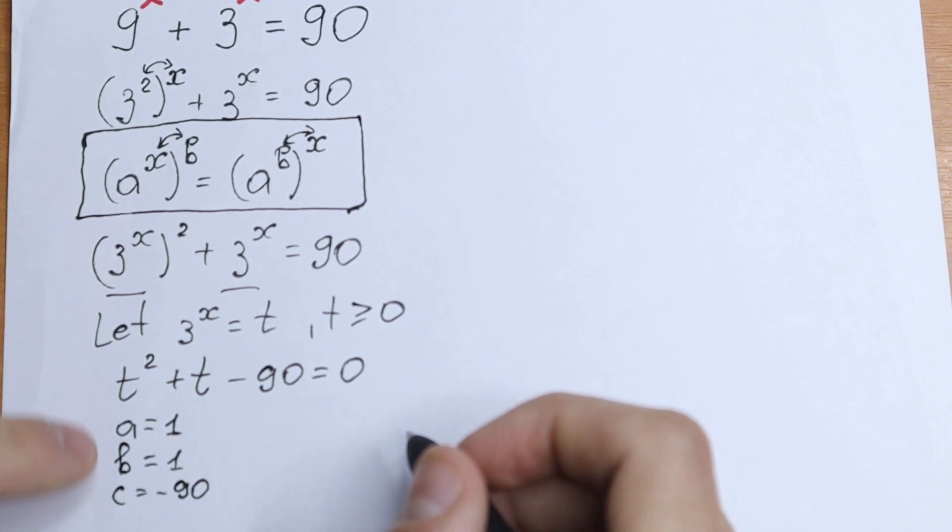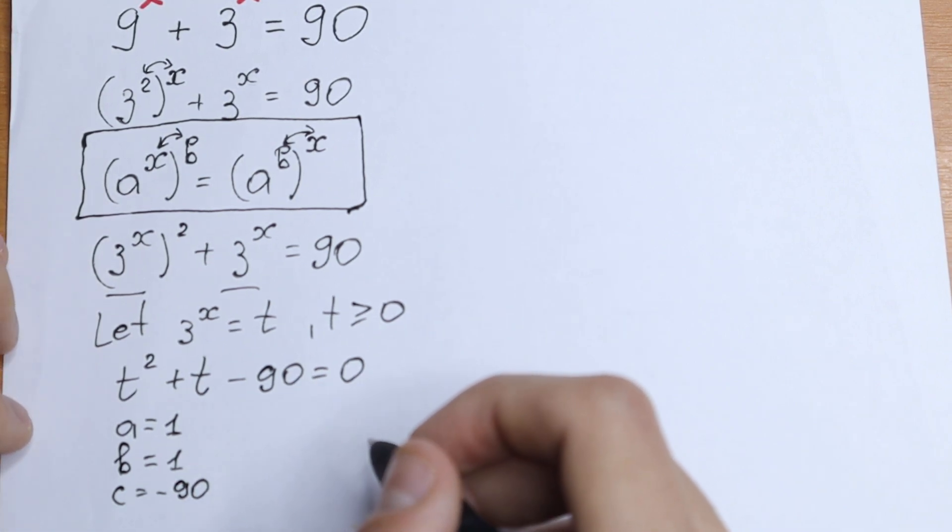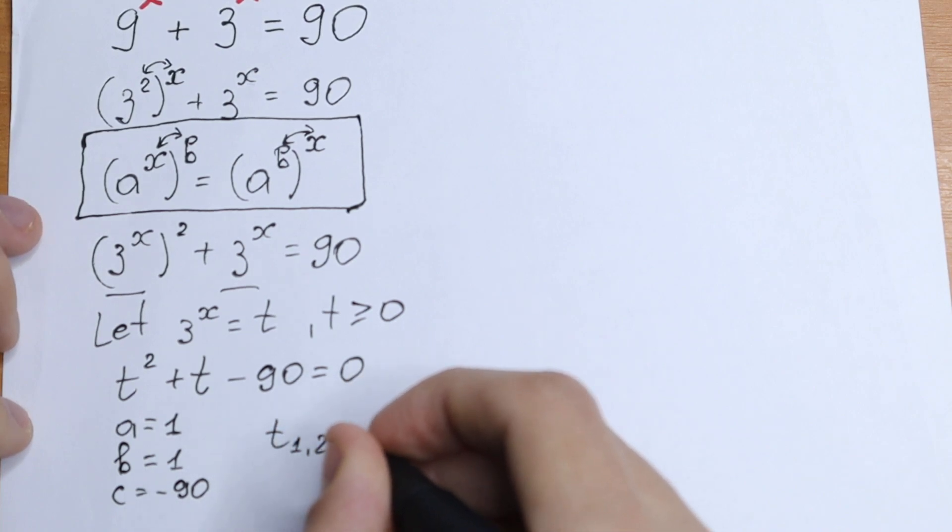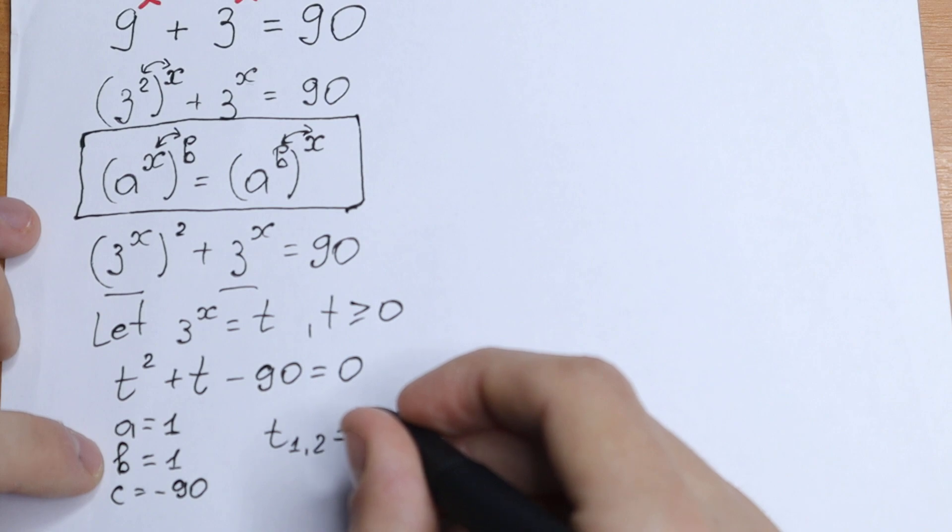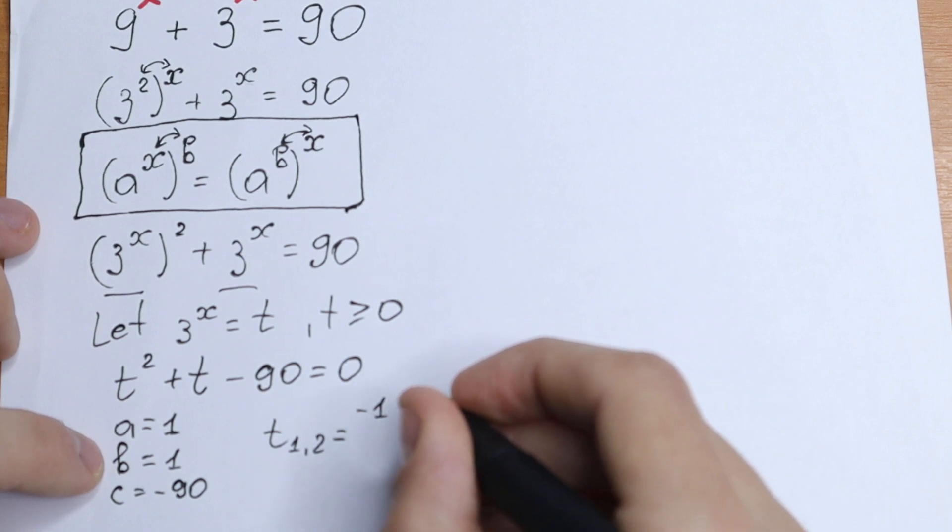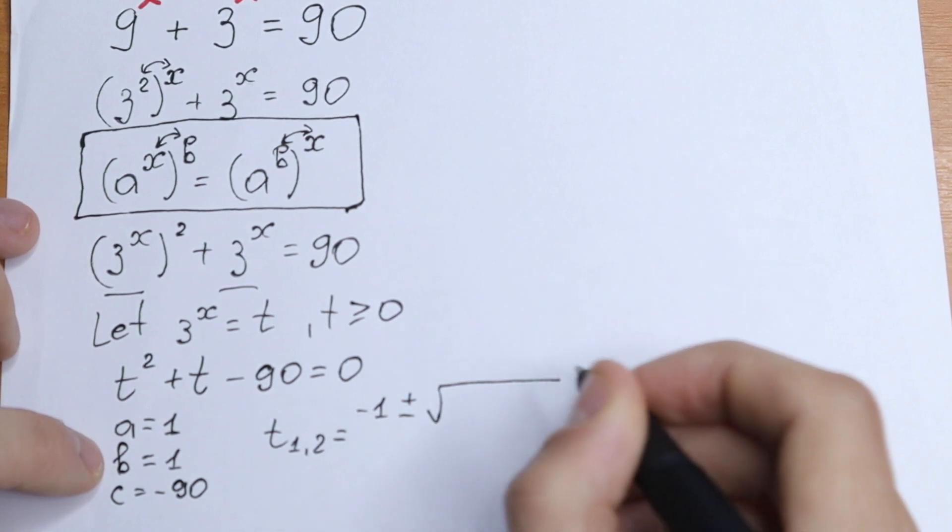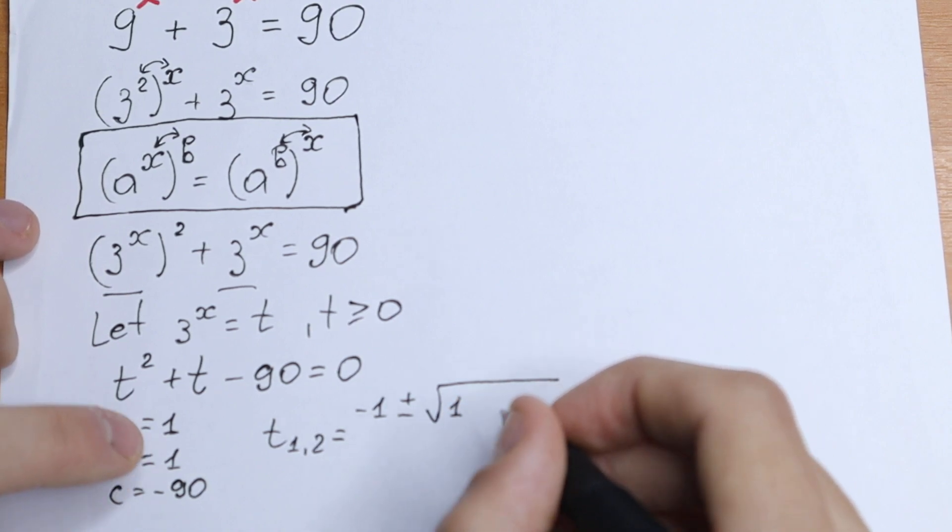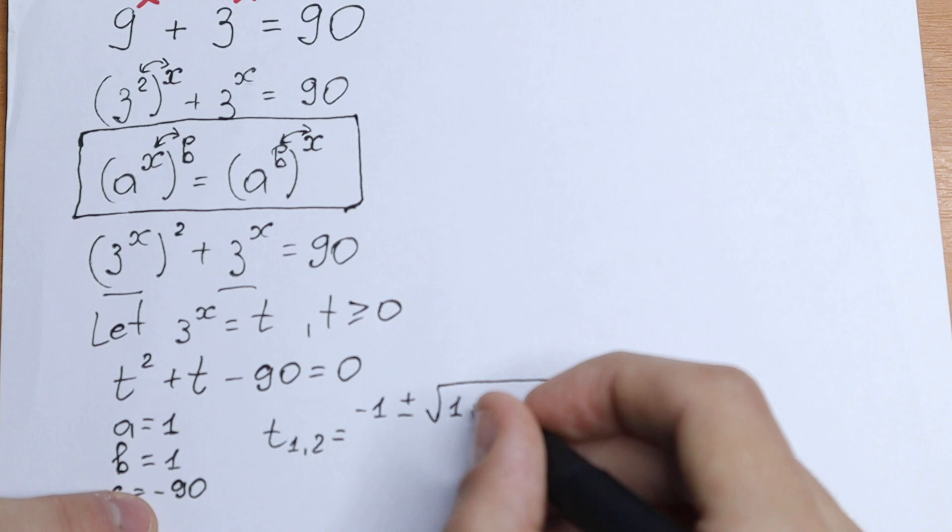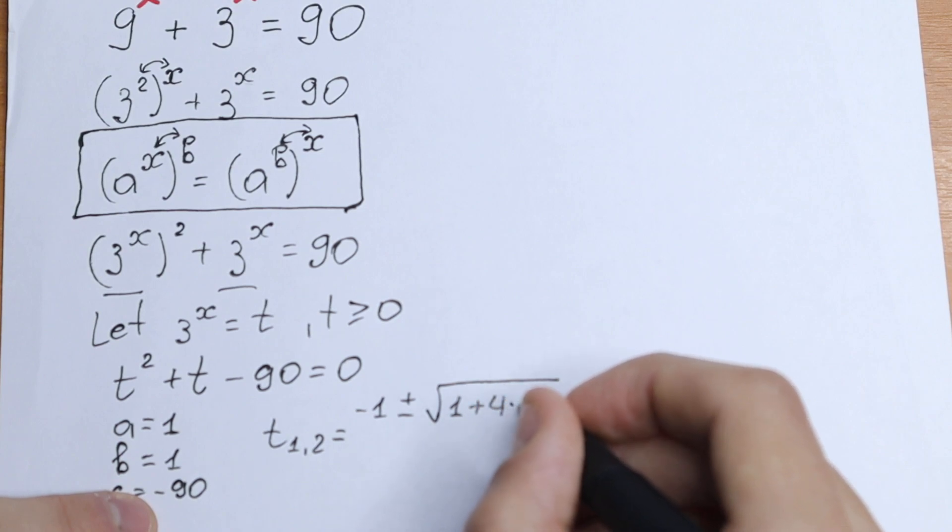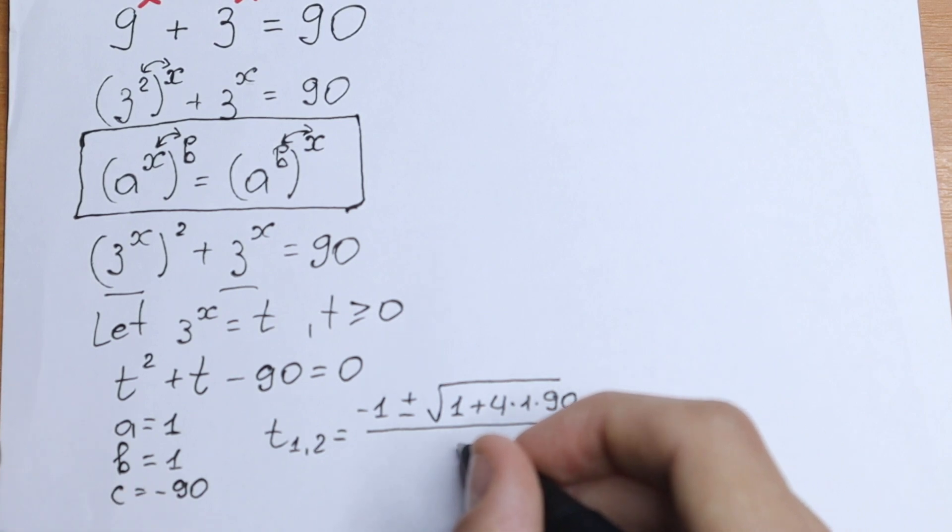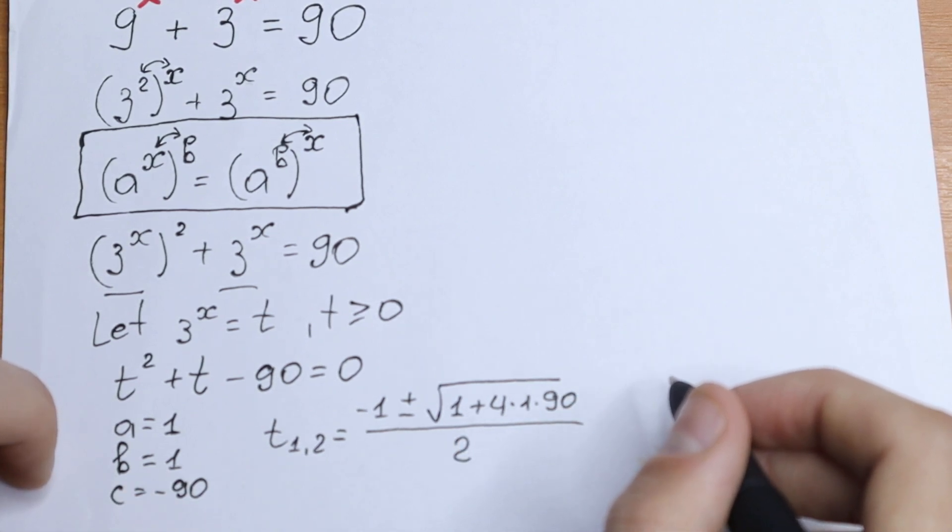So let's put all of this, all of these coefficients in our formula. So our t1 and t2 will be equal to minus b. It will be minus 1. I write plus minus and this square root. Inside the square root we'll have b squared, 1 minus, with this minus will be plus, plus 4 times 1 times 90. Just all these coefficients. And all over 2a. All over 2.